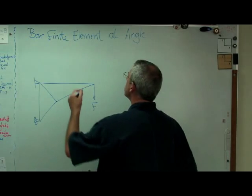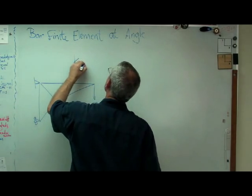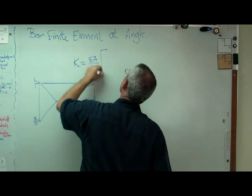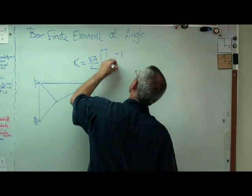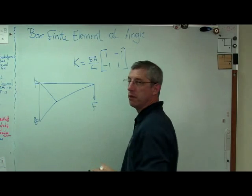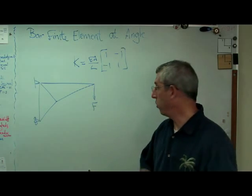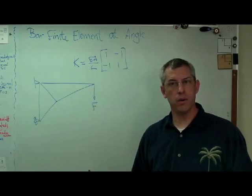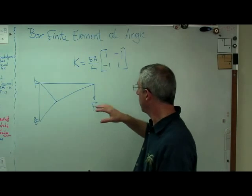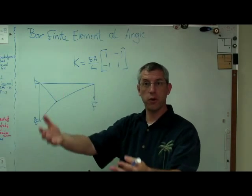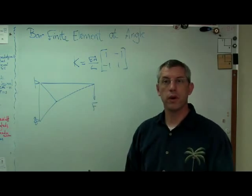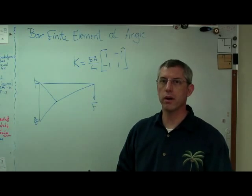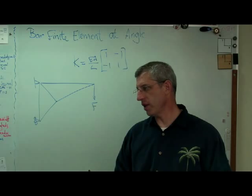Up till now, the stiffness matrix we had looked like EA over L times [1, -1; -1, 1]. That was the stiffness matrix in global coordinates, because it's all we know about. Now what we're going to do is figure out how to transform from the element coordinates to the global coordinates if the element isn't horizontal.